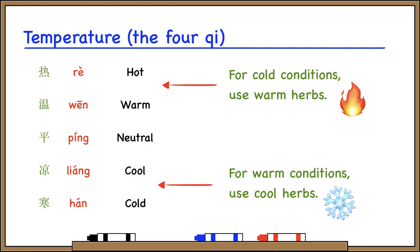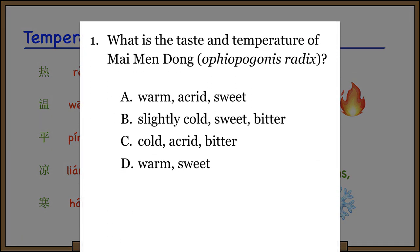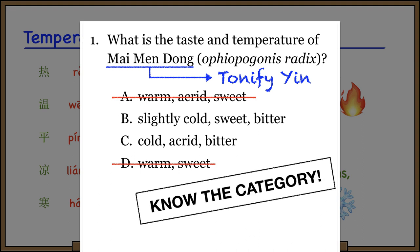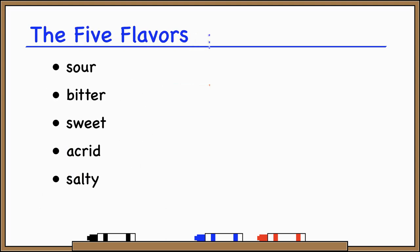This might seem pretty obvious, but it's sometimes easy to overlook. For example, suppose you get the question: what is the taste and temperature of Maimondong? If you remember your categories, you know that Maimondong is in the category herbs that tonify yin. So if you're prescribing this herb to a patient with yin deficiency, that probably means they have signs of heat, meaning you'd want cooling herbs. Cross out any answers that are warm in temperature. This highlights a basic test-taking strategy: if you know nothing else about an herb, at least know the category.